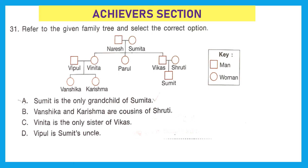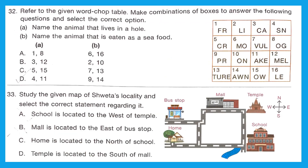Continuing question 31: Option C — Vinita is the only sister of Vikas — is also incorrect because Vikas has two sisters, Vinita and Parul. Option D — Vipul is Sumit's uncle — let's verify: Sumit is the child of Vikas, and Vinita is Vikas's sister, so Vinita is Sumit's aunt. Vinita is married to Vipul, so Vipul is Sumit's uncle. Option D is correct.